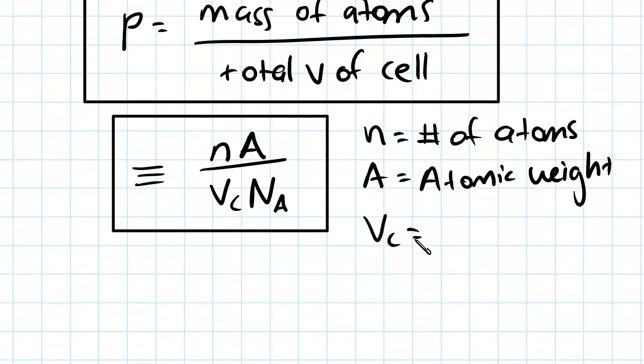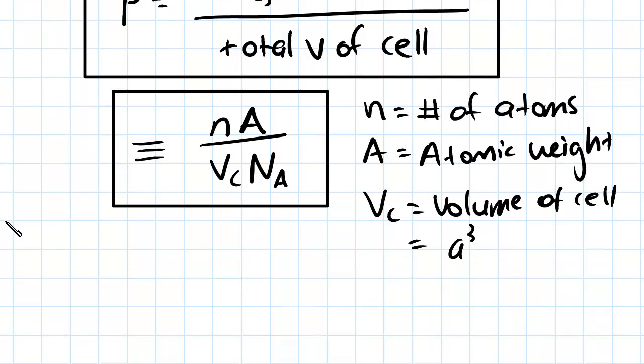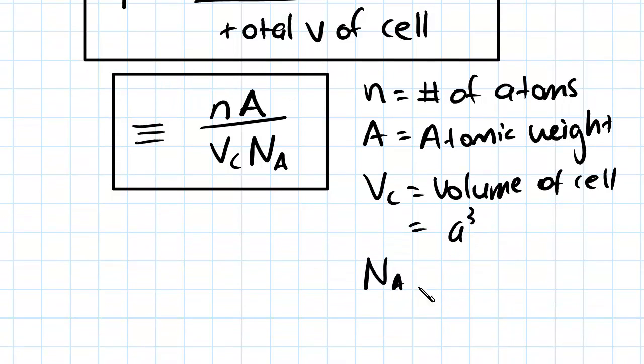Okay, Vc is going to be the volume of the cell, which as you'll remember equals A cubed. And then Na is going to be Avogadro's number, which, just to jog your memory, is 6.023 times 10 to the 23.